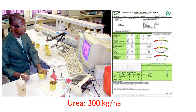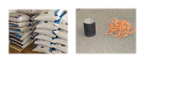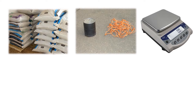Now let's see how we go about applying this fertilizer correctly using the tin and string method. You will need your fertilizer, a suitably sized tin to apply the fertilizer, a length of string or rope, a scale to determine the mass of fertilizer in the tin, and a measuring tape.